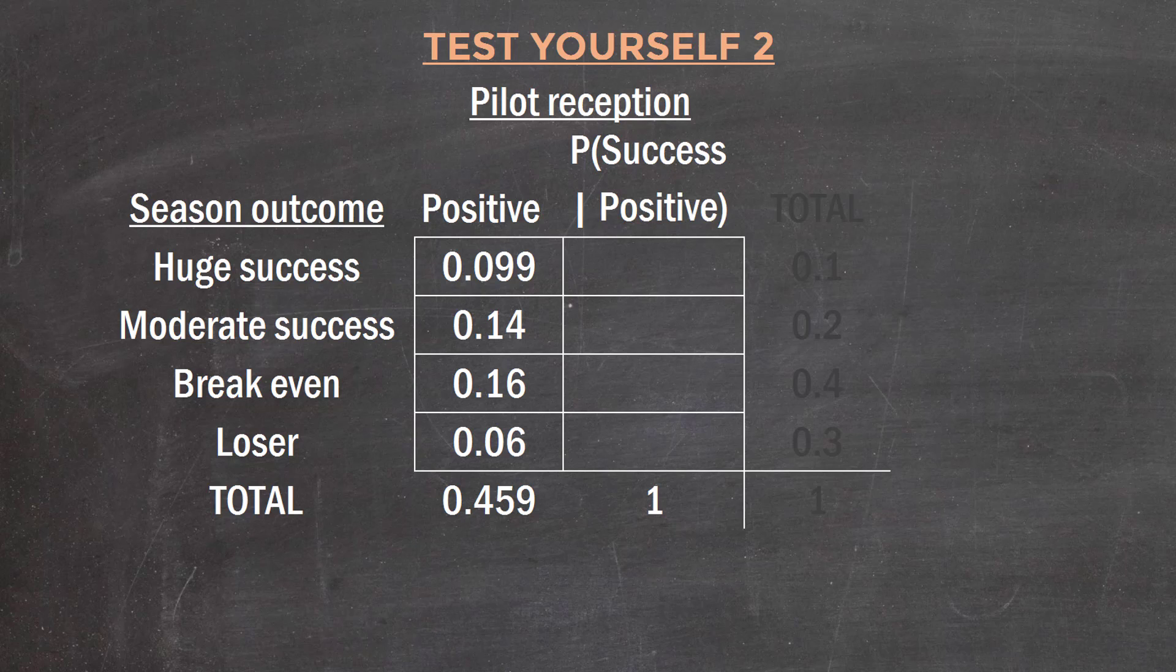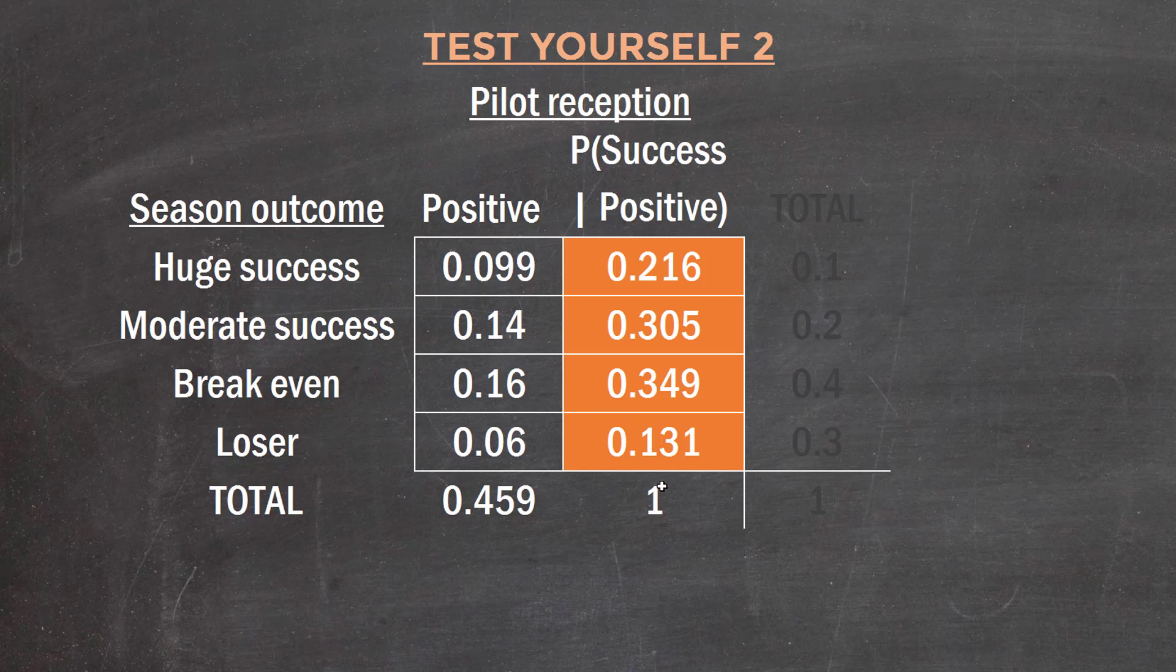So I can create for myself a conditional set of probabilities. So this is the probability of each of these success outcomes, given there's a positive pilot reception. The first one's going to be 0.099 divided by 0.459. The next one's going to be 0.14 divided by 0.459, and so on. So it totals one.